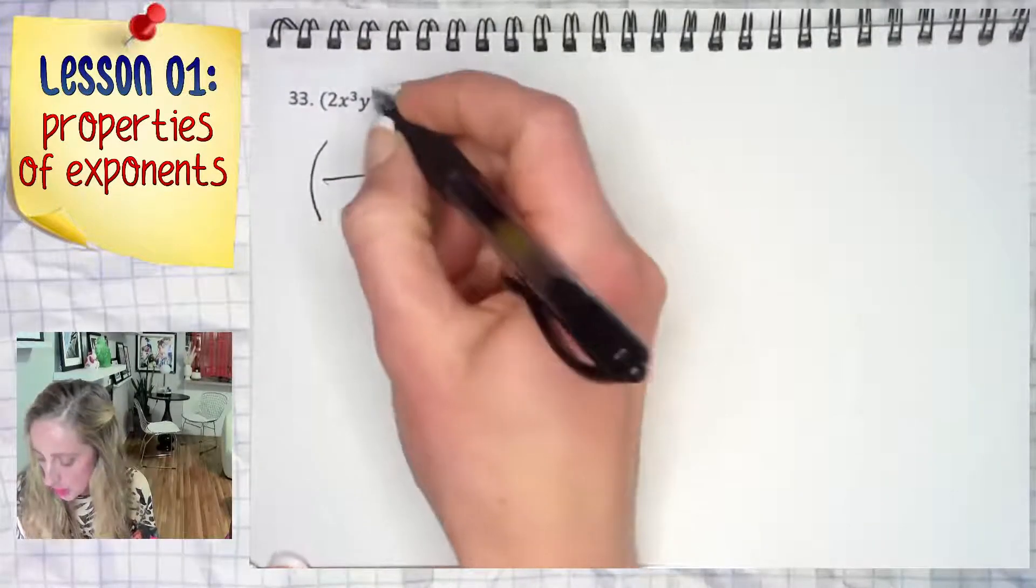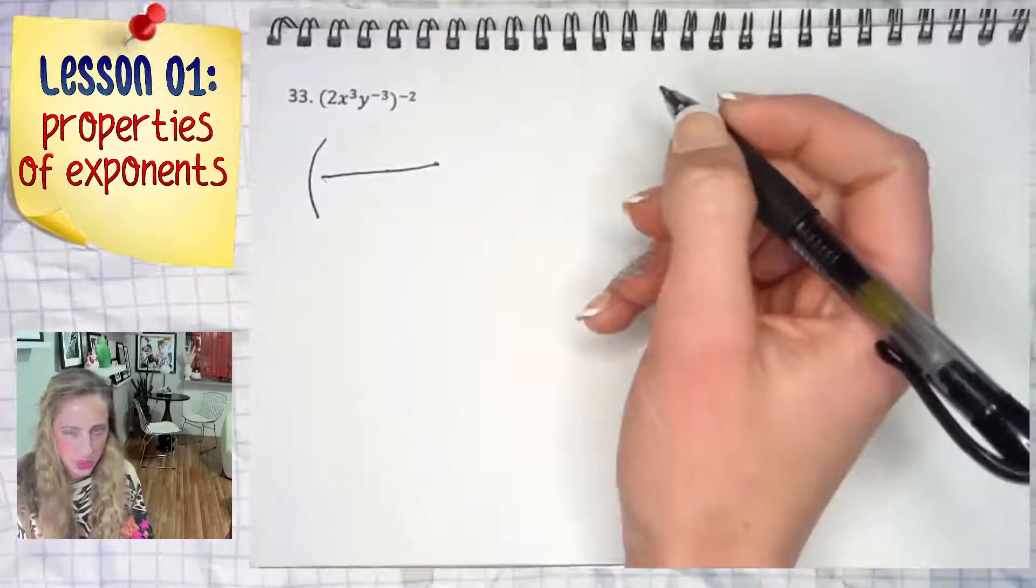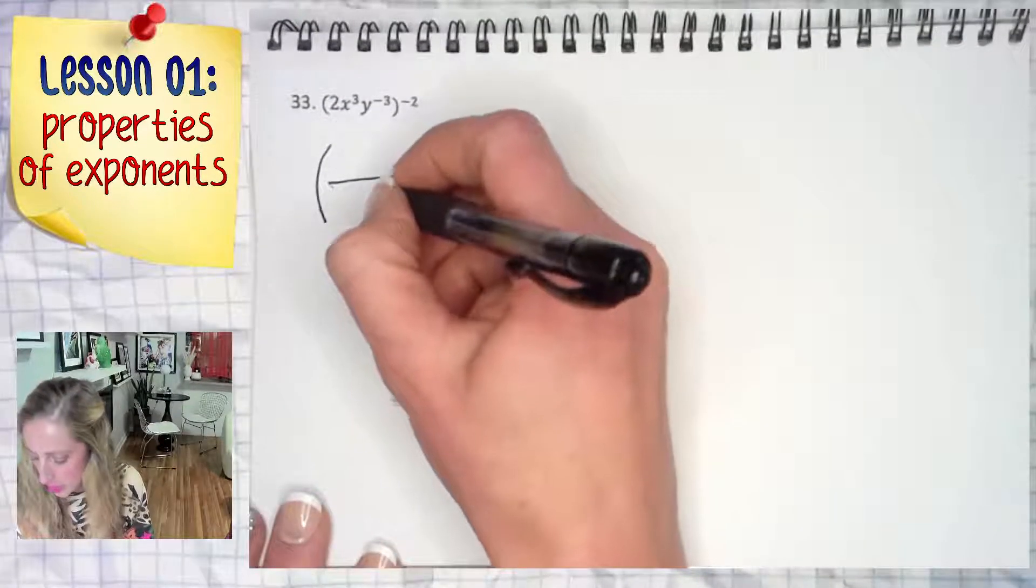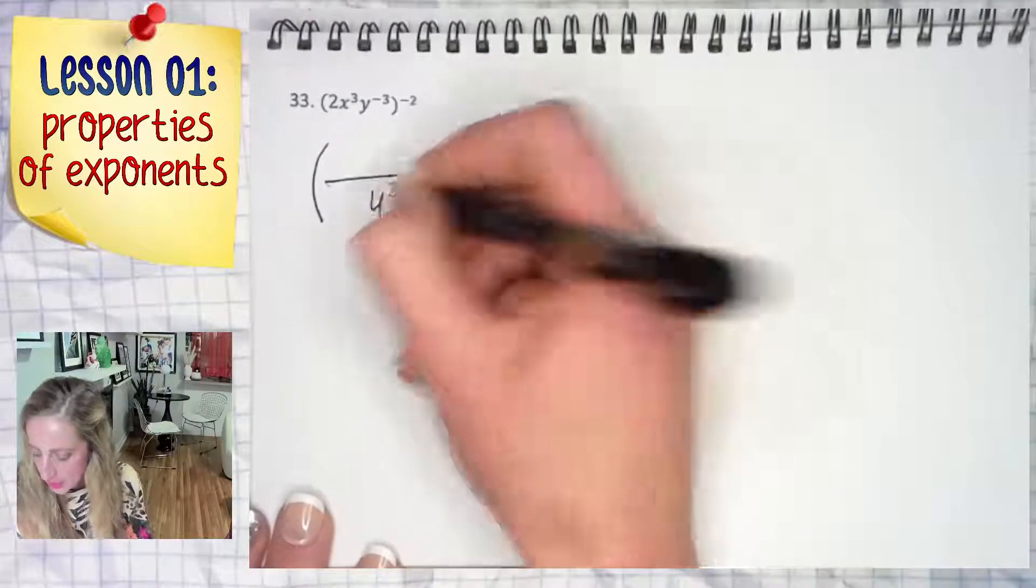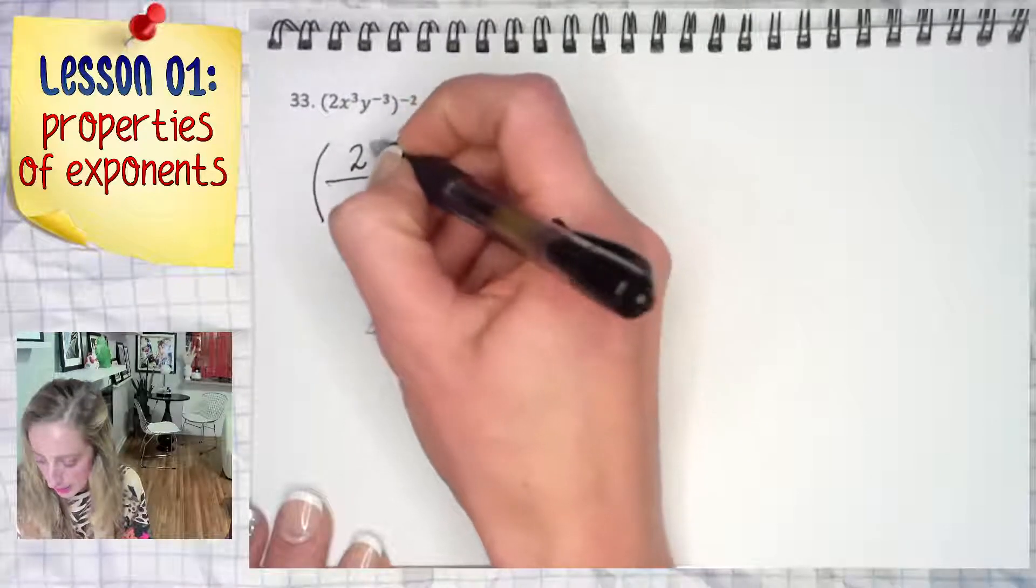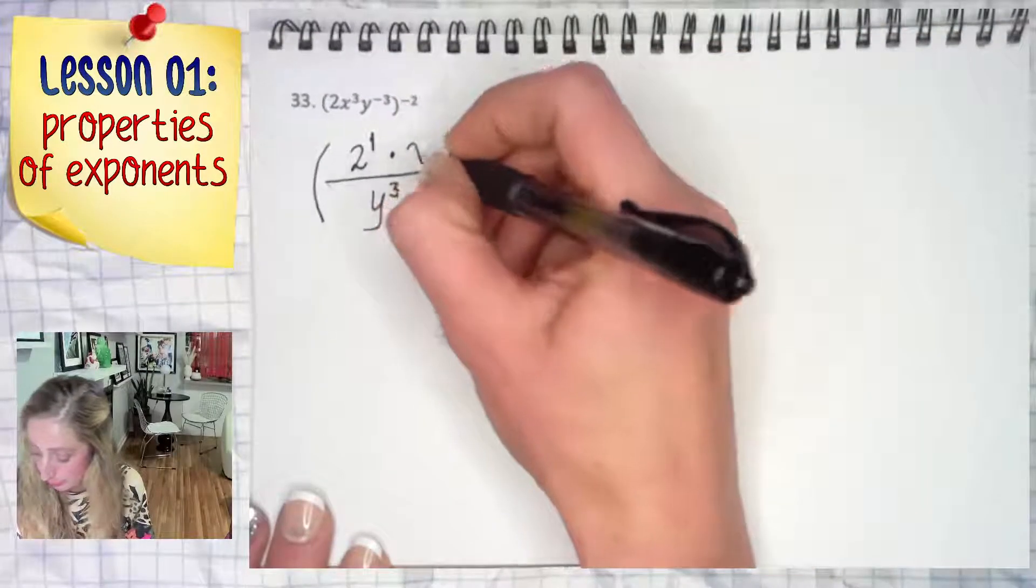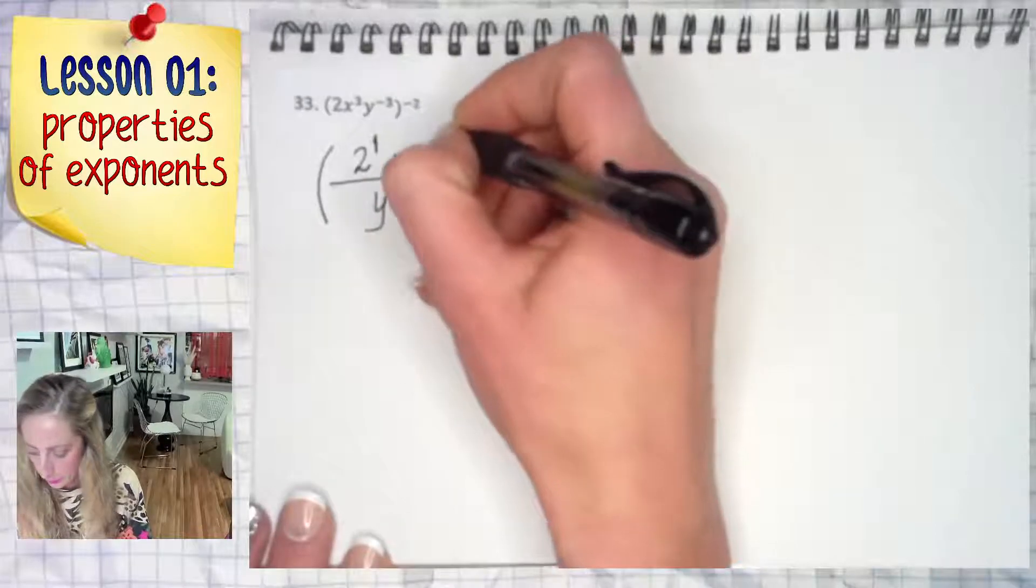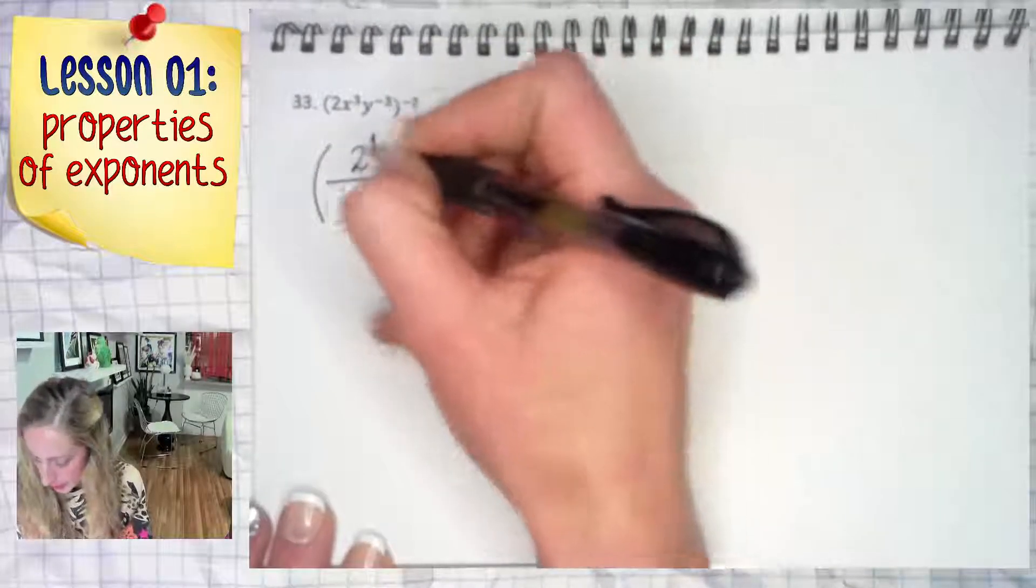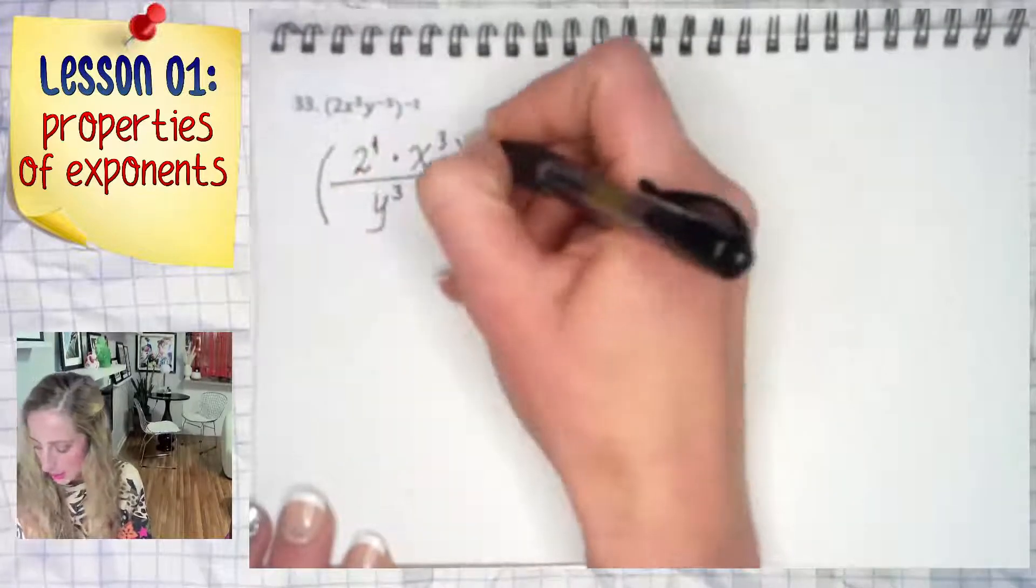This time around, I'm going to deal with this y to the negative third early on. Now, is this necessarily what I would do in a real situation? I don't know, but I'm just giving you options. So if that comes down to the bottom, it's now y to the third. What did stay on top? The 2, which is 2 to the first. A lot of you act like you're too cool for that one and then you screw up, so you're not getting any sympathy from me if you mess up when I warn you all the time. And this whole guy over here is to the negative second power.